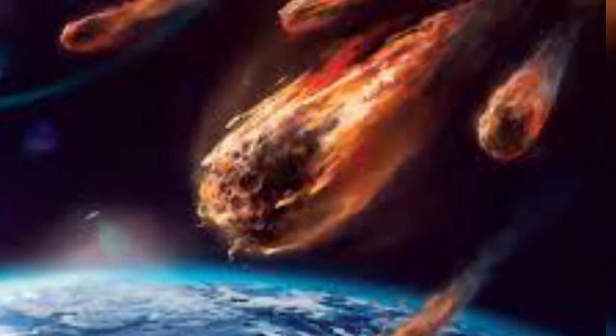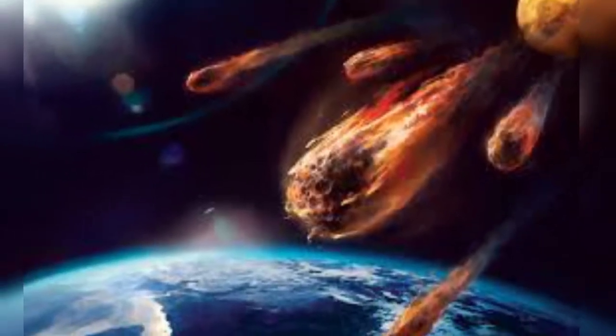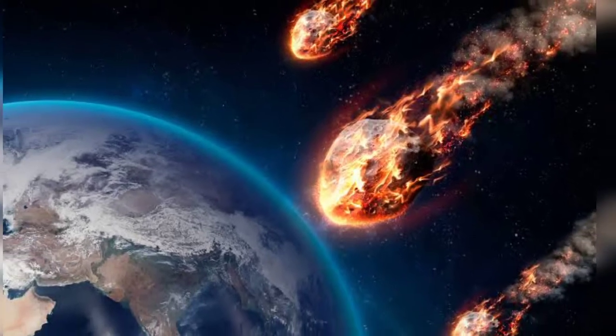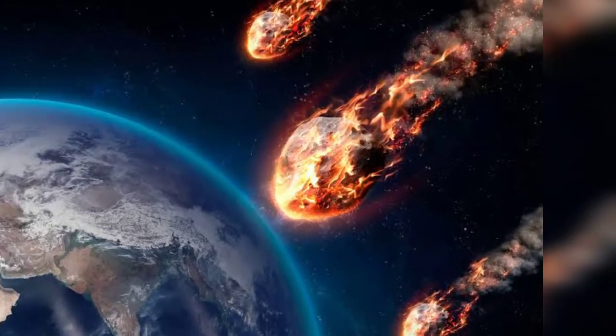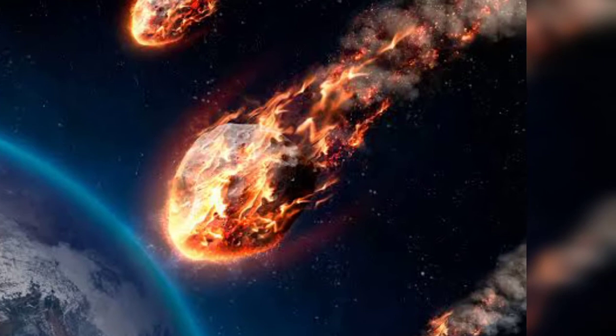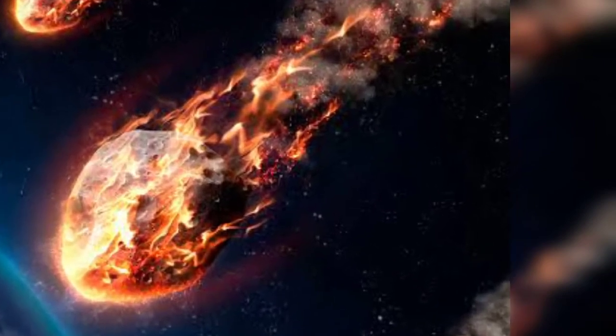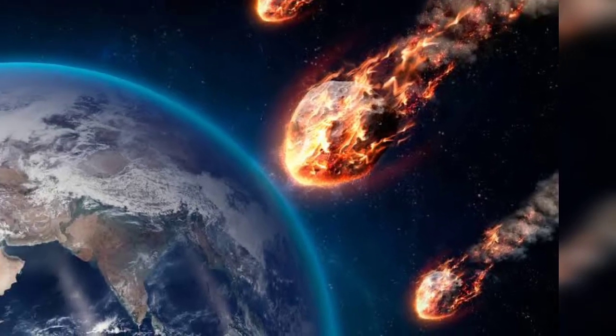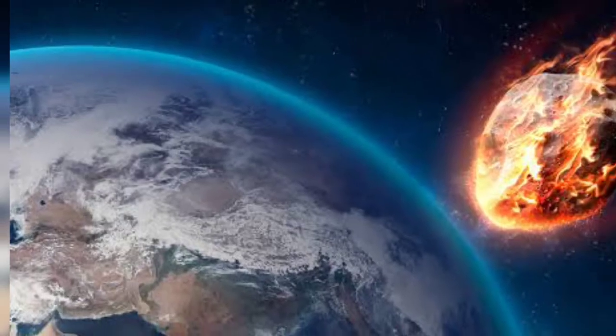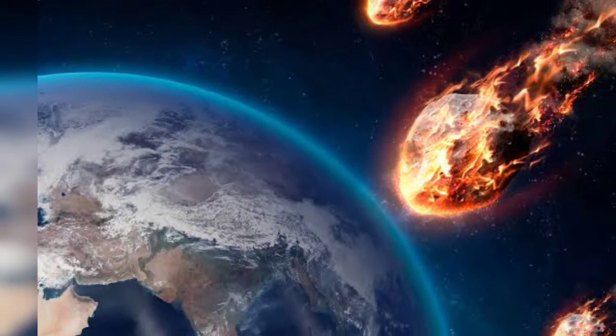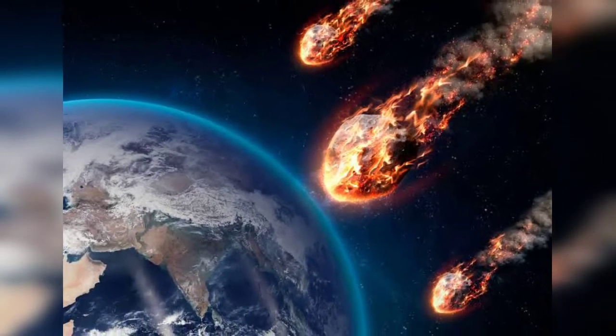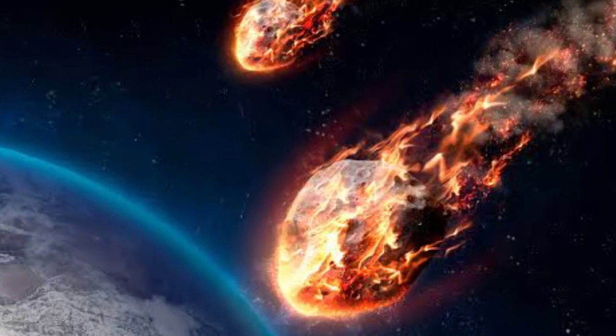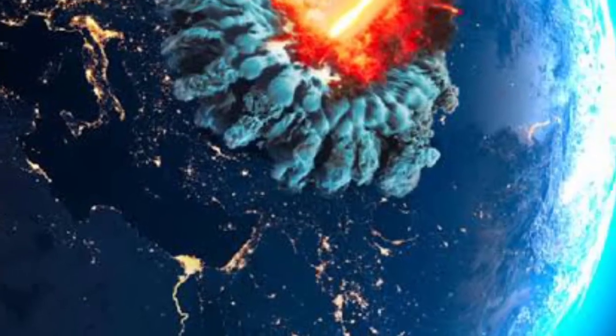Can asteroid 2019 SX5 hit Earth? The National Aeronautics and Space Administration has issued a warning that huge asteroid 2020 ND will move past Earth on July 24th. There is also information about two asteroids expected to pass our planet on Sunday. The two asteroids named by NASA are 2016 DY30 and 2020 ME3.